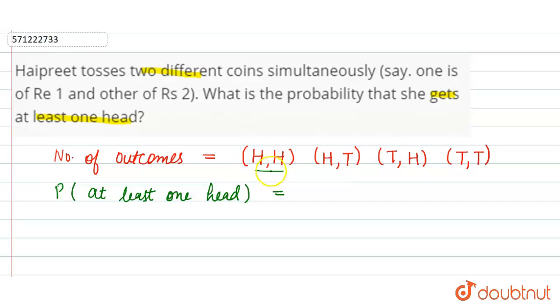There is one possibility: two heads are there, at least one head. In the second outcome also one head is there. In the third outcome one head is there, and the fourth outcome there is no head. So out of four outcomes there are three possible probabilities that she gets at least one head, three out of total possible outcome four.